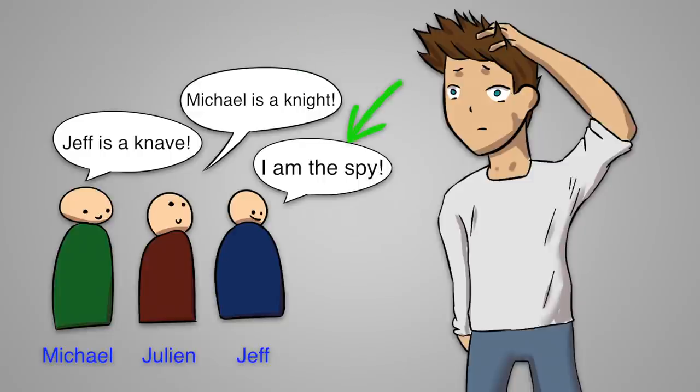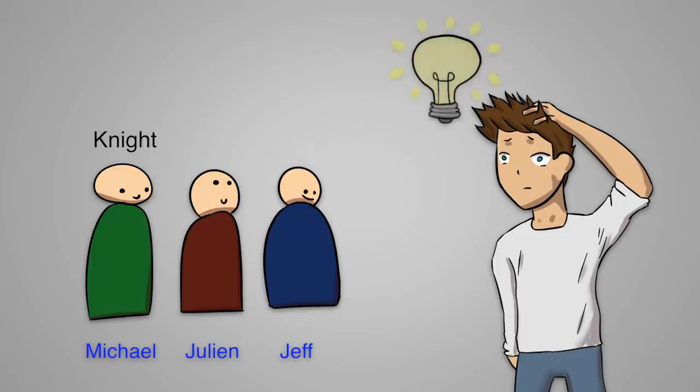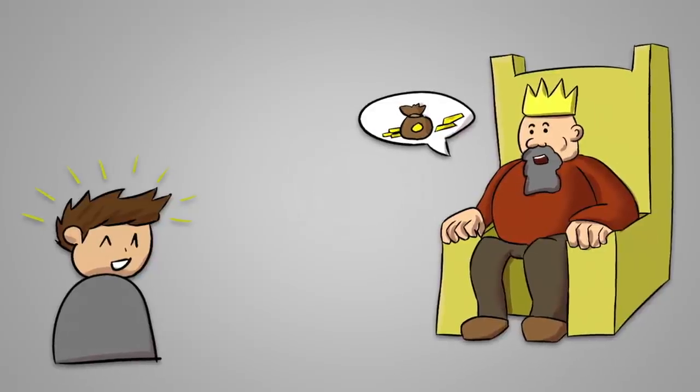Jeff cannot be the knight, since his statement would then be a lie. Now you know that Michael is the knight, Jeff must be the knave, and Julian is the spy. Your king will be happy with you.